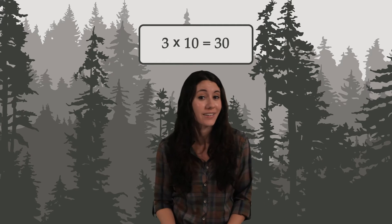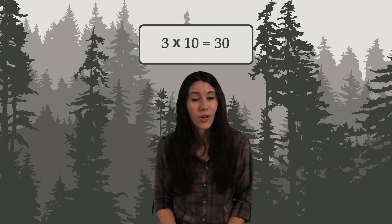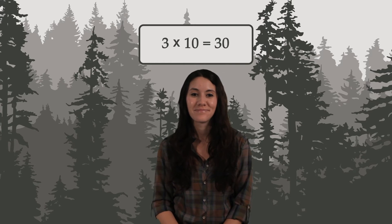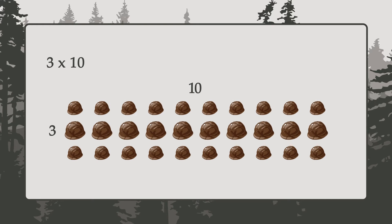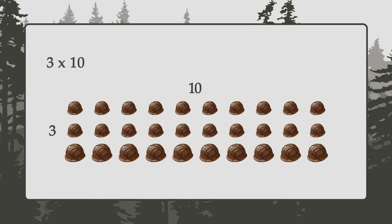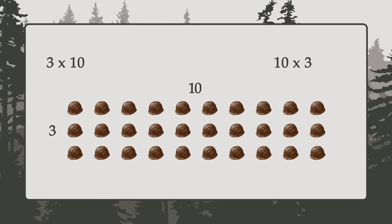By the way, that little x symbol is called the multiplication sign. Let's look at a picture of the chocolates. You're giving 3 chocolates to 10 friends. But if you go from left to right, the number of chocolates is 3 times 10. Now look at this from top to bottom — there are 10 chocolates, 3 times, which is 10 times 3. Either way, there are 30 chocolates.